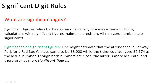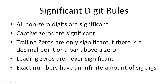One might estimate that the attendance in Fenway Park for a Red Sox-Yankees game is about 38,000, while the ticket counter gave 37,574 as the actual number. Though both numbers are close, the latter is more accurate and therefore has more significant figures. So let's take a look at the significant digit rules.